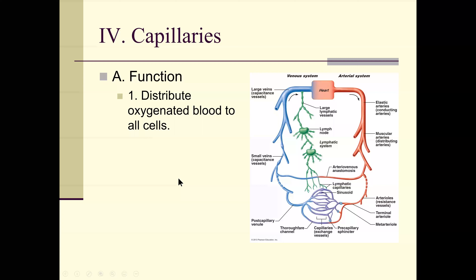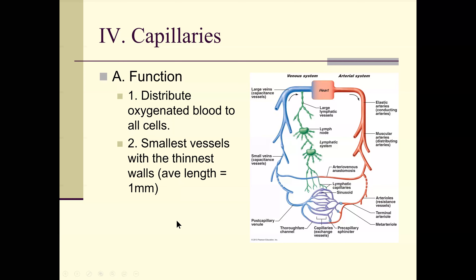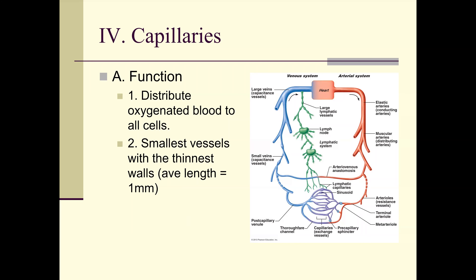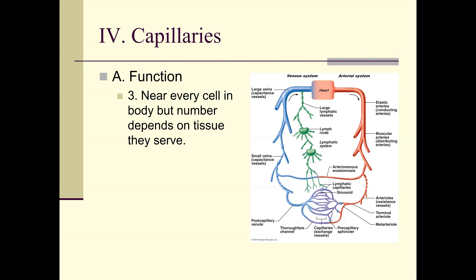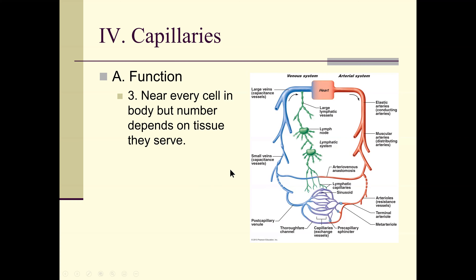Capillaries distribute oxygenated blood to all cells — every cell in the body needs oxygen. They have the smallest vessels with the thinnest walls. Average length is one millimeter, and average thickness is one cell layer. The number of capillaries depends on the tissues they serve — tissues requiring a great deal of oxygen, like the brain and heart, have extensive capillary beds, while tissues needing less oxygen have fewer.